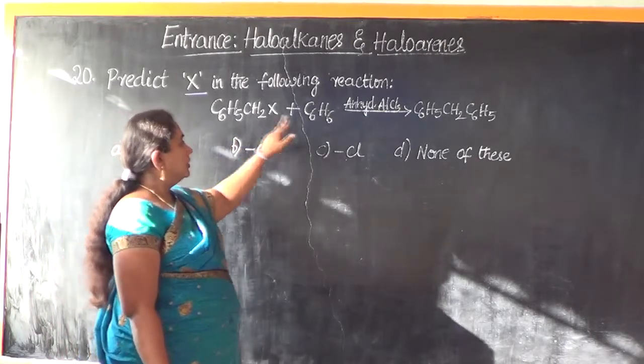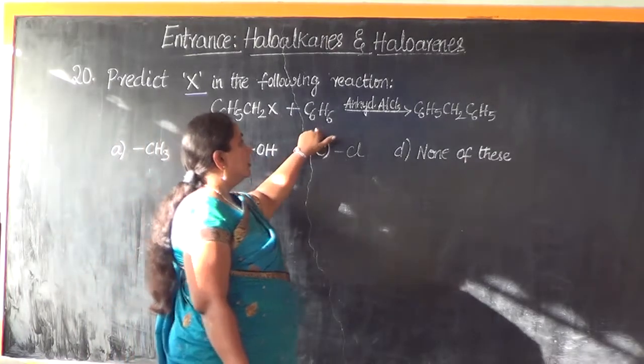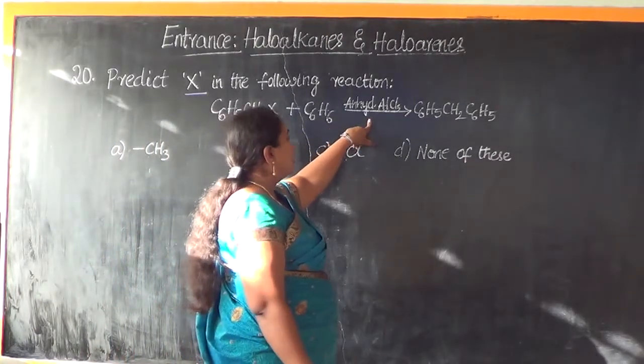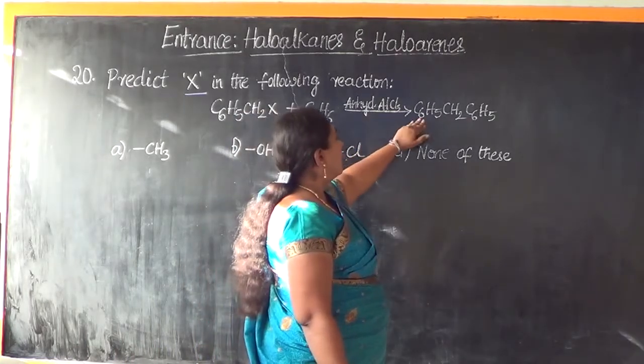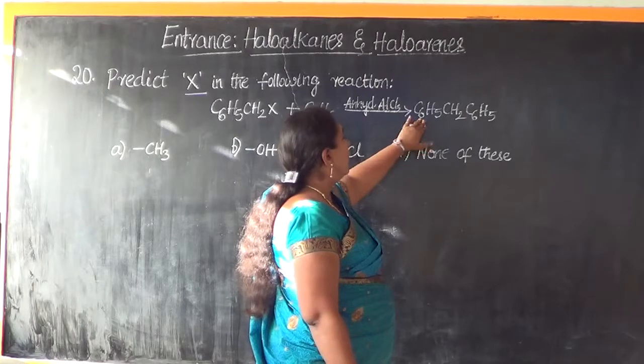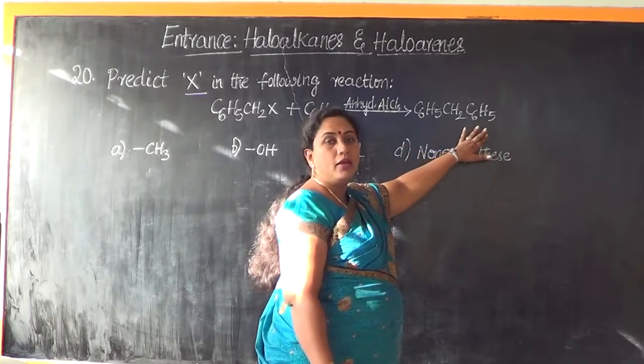C6H5CH2X plus C6H6 is treated in presence of anhydrous aluminium chloride as the catalyst and it results in the formation of C6H5, CH2, C6H5.